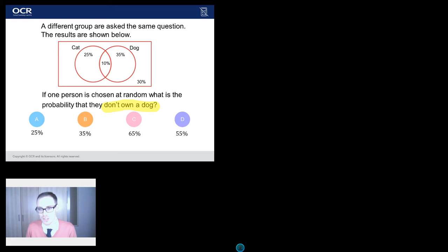So I want all the people who do not own a dog. Right. Best place to start, I think, is to let's get our head around who's actually got a dog here. So if you've got a dog, you fit inside the dog circle. So all the people inside here own a dog. So these 35% own a dog. And crucially, these 10% own a dog.